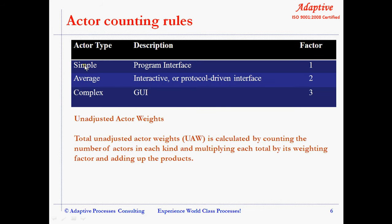Actors are classified based upon their complexity as simple, average, or complex. An external system that must interact with the system using a well-defined API is considered simple. An external system that must interact using standard communication protocols such as TCP, IP, FTP, HTTP, or databases is considered average. A human actor using a GUI application interface is considered complex.